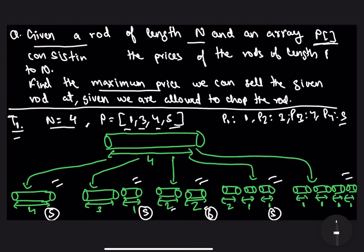The last way is to chop the rod of length 4 into 4 rods of length 1 each, so the total price will be 4 × P[1] = 4. The maximum price for this rod corresponds to the third case, where we chop the rod into 2 rods of length 2 each. Thus the answer is 6 for this test case.